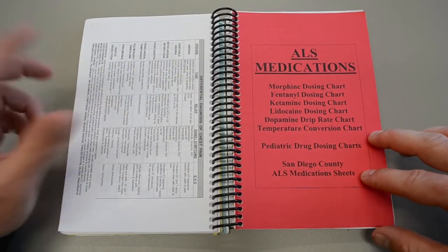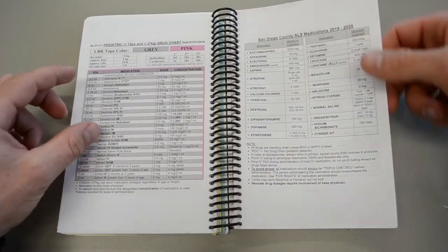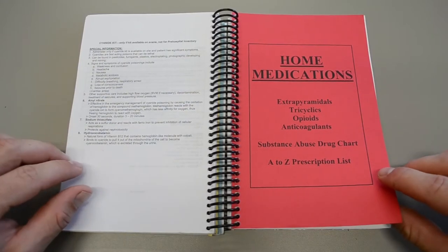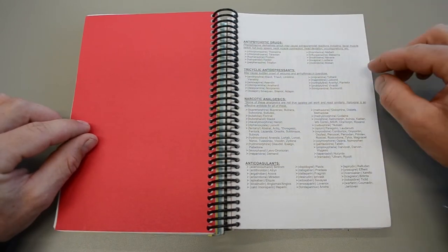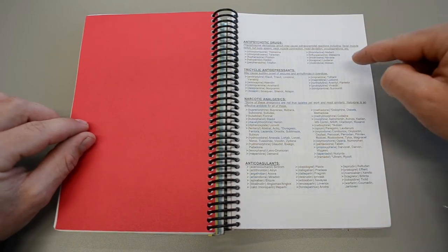ALS medications. Obviously not something we are going to concern ourselves with. Home medication section. This one is actually very relevant. On the first page you have your antipsychotics. Very common medications with both their trade name and their brand names.